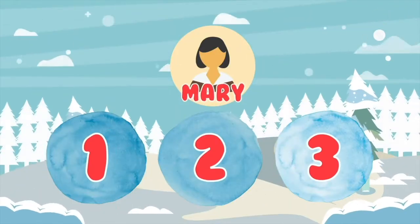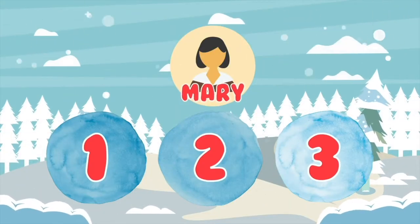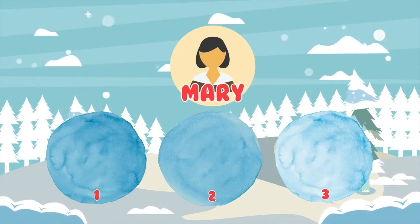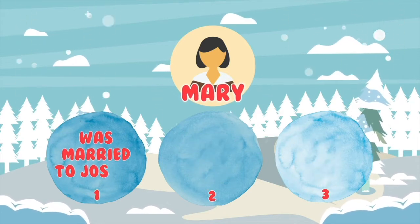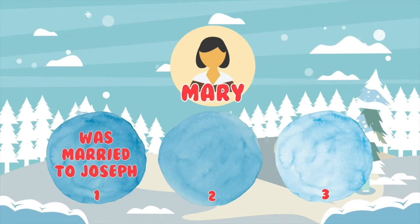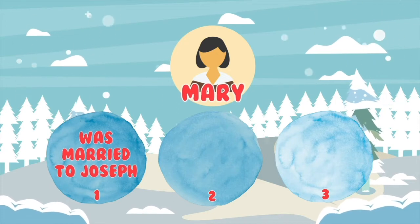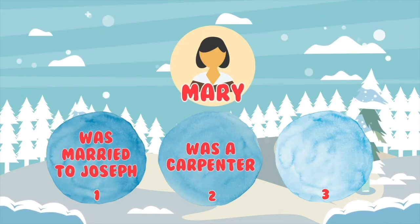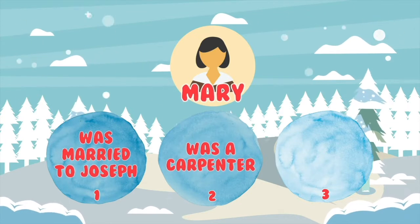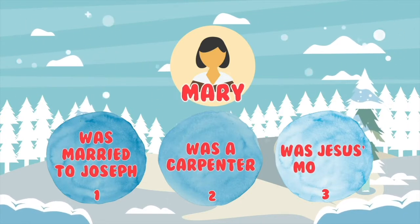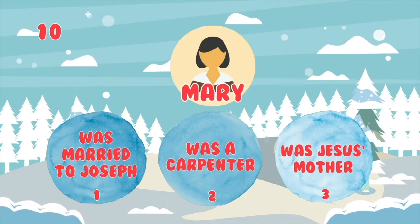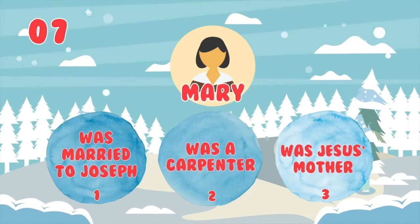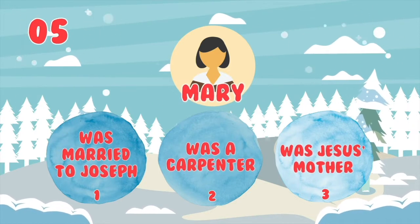Mary is our next Bible character. Which of these is not true about Mary? One: Mary was married to Joseph. Two: Mary was a carpenter. Three: Mary was Jesus' mother. So what do you think? Which of these snowballs is not being completely honest?